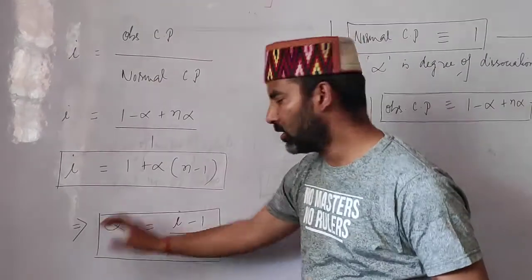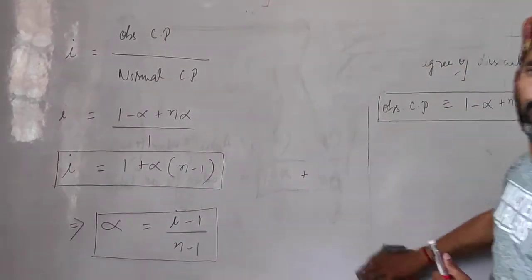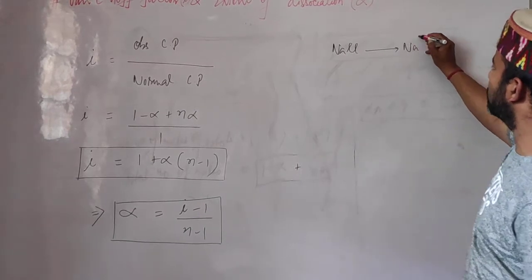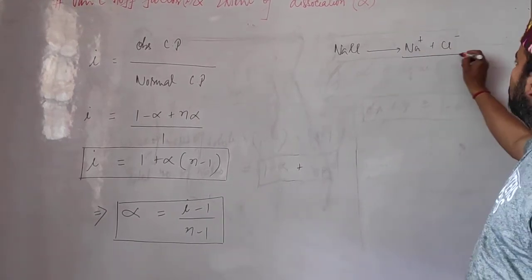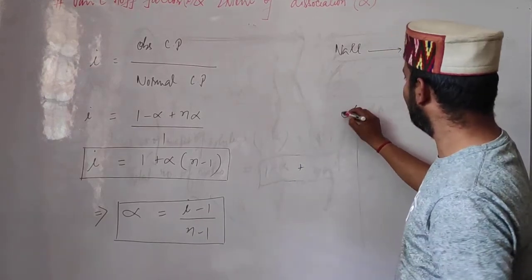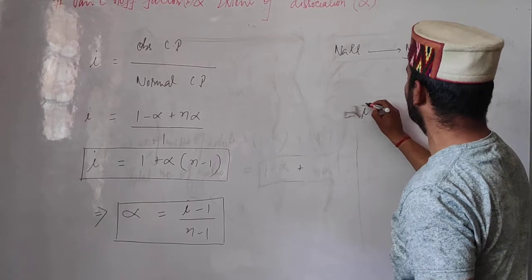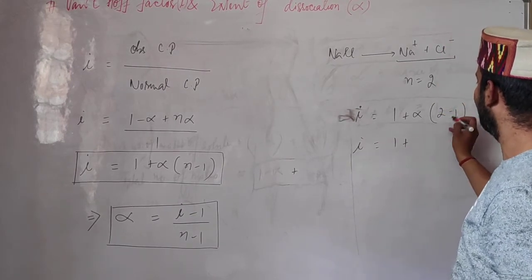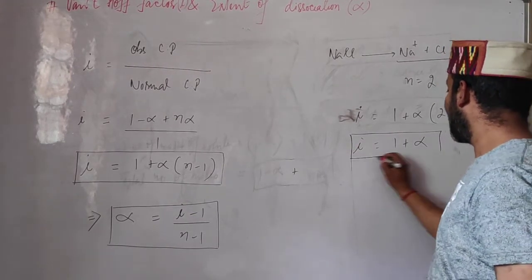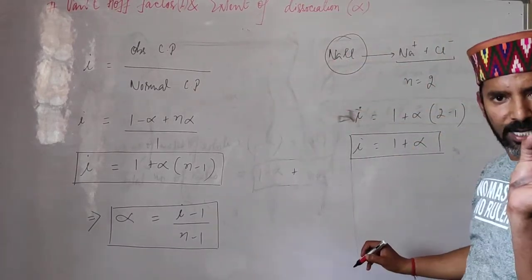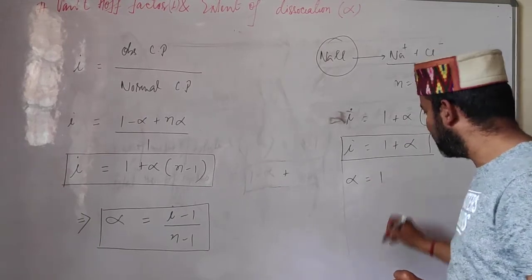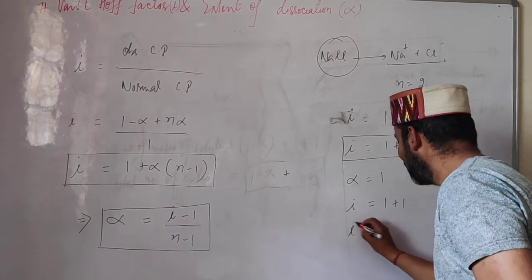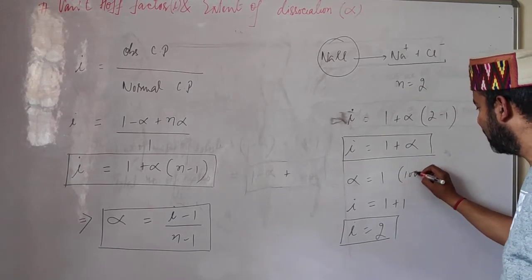Let's apply this to NaCl as an example. NaCl dissociates to give Na⁺ and Cl⁻, so n equals 2. Therefore iota = 1 + alpha(2 − 1) = 1 + alpha. Assuming NaCl is a strong electrolyte with 100% dissociation, alpha equals 1, so iota = 1 + 1 = 2. This confirms that when dissociation is 100%, iota equals the number of ions produced.